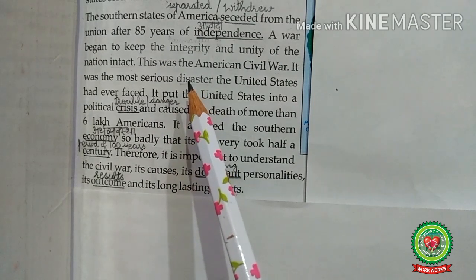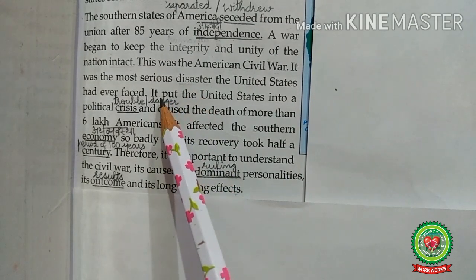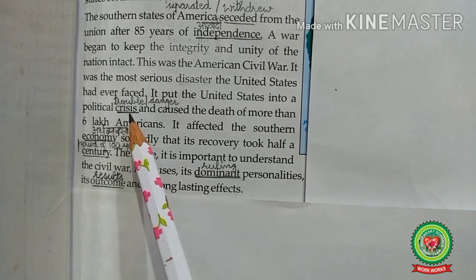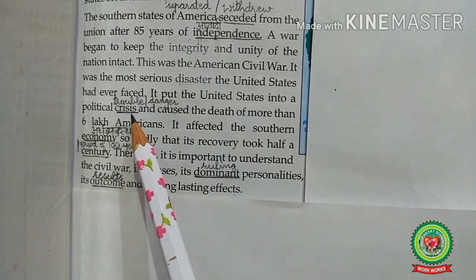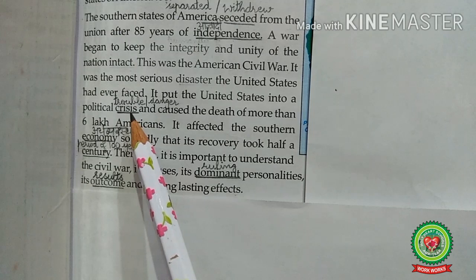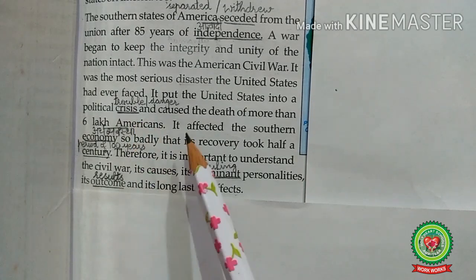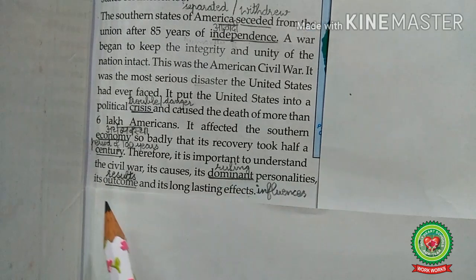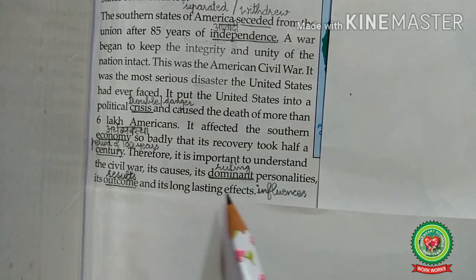It was the most serious disaster the United States had ever faced. Disaster means an event which causes great damage or loss of life. It put the United States into a political crisis and caused the death of more than 6 lakh Americans. This civil war caused a lot of destruction, many political crises, and affected the economy very badly. The southern economy was affected so badly that its recovery took half a century. It is therefore important to understand the civil war, its causes, its dominant personalities, its outcome, and its long-lasting effects.